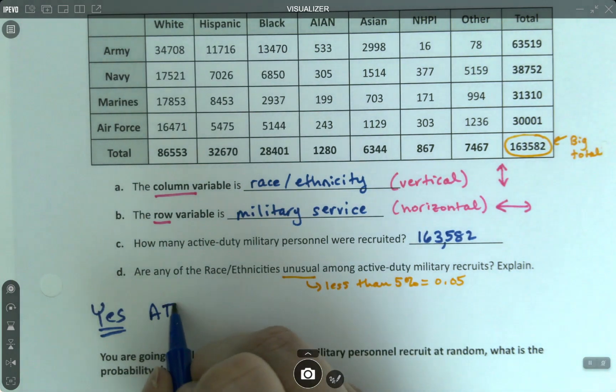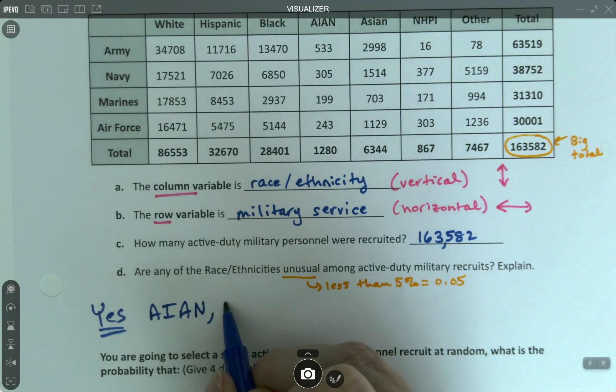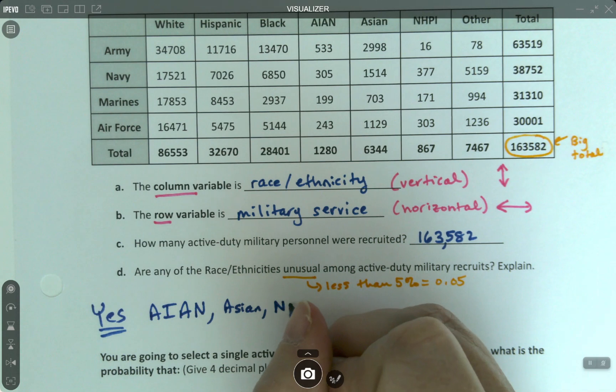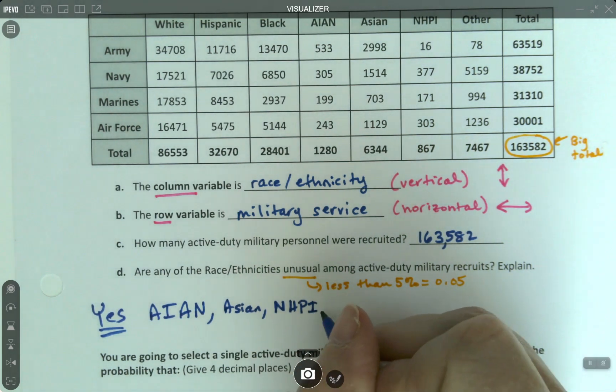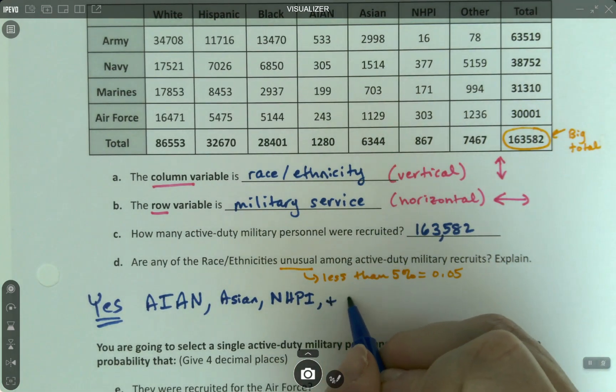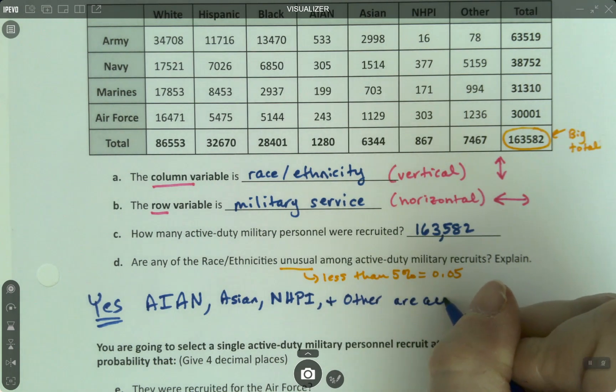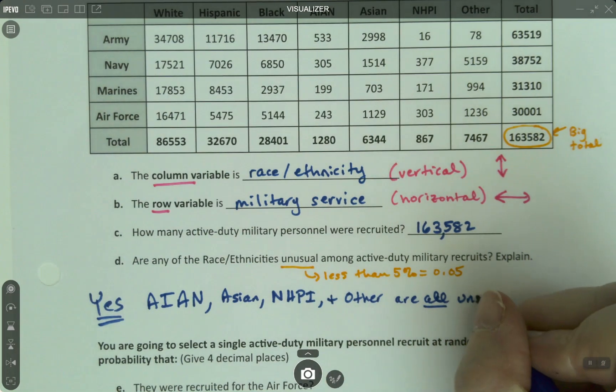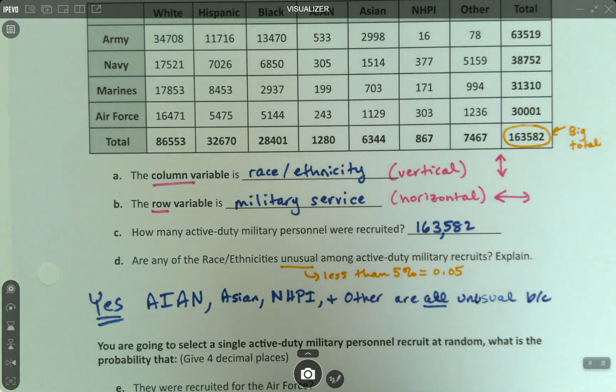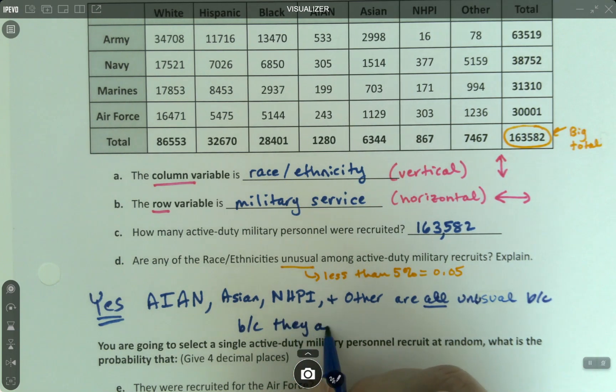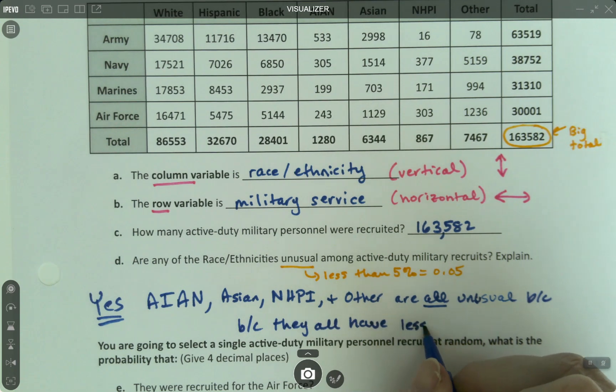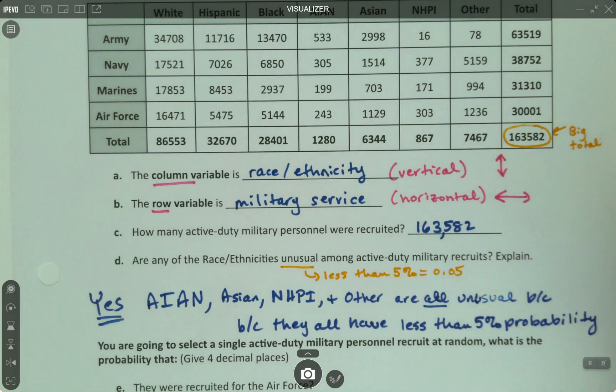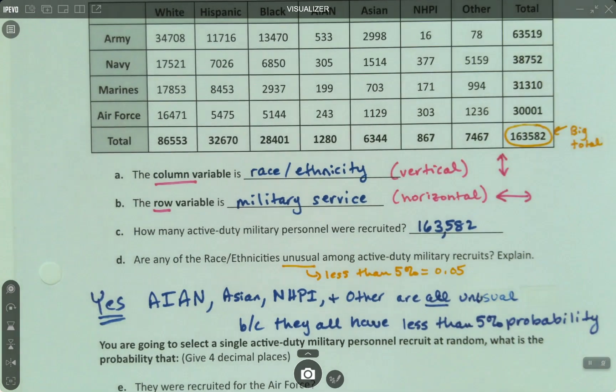So are any of the races and ethnicities? Yes. Very much so. So yes. So it was AIAN, which is American Indian Alaskan Native, Asian, NHPI, which is Native Hawaiian Pacific Islander, like people that are from Guam, for example, and other, are all unusual. I'm spelling unusual wrong. Unusual. I had a little bit of dyslexia there for a second. Unusual because they all have less than 5% probability.